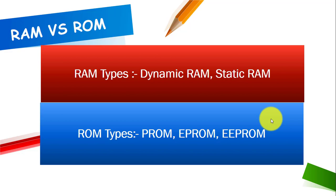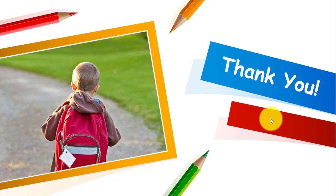We have a few types of RAM: dynamic RAM and static RAM. Whereas the ROM types are PROM, EPROM, and EEPROM. That's all for today — a very precise and comprehensive overview of the differences between RAM and ROM.